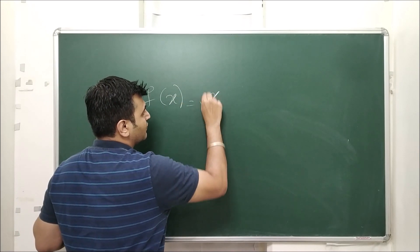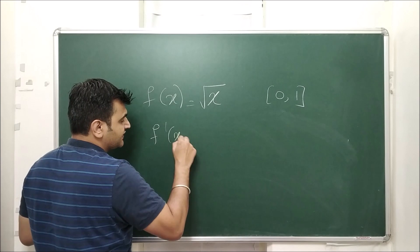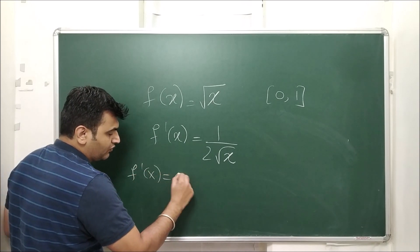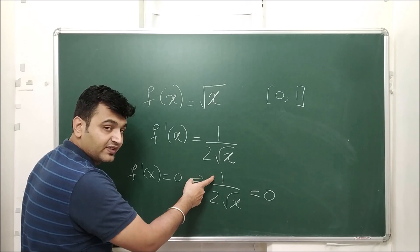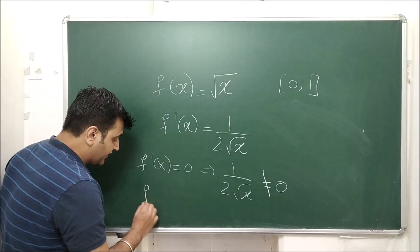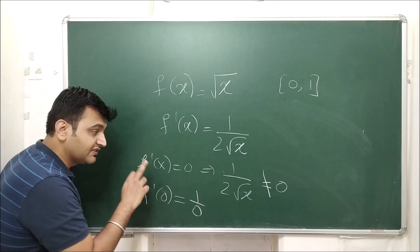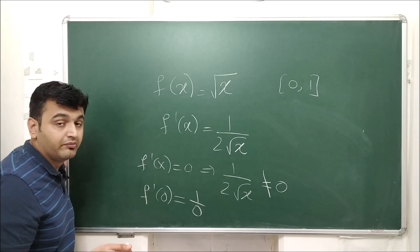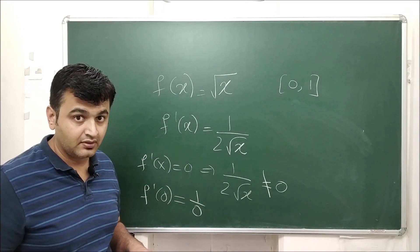Now take f(x) = √x on the interval [0, 1]. The derivative is 1 / (2√x). This fraction is never zero because the numerator is always 1. The derivative is not defined at x = 0, since f'(0) = 1/0, which is undefined. However, x = 0 is a boundary point of [0, 1], not an interior point, so 0 is not a critical point. Therefore, this function has no critical points on this interval.